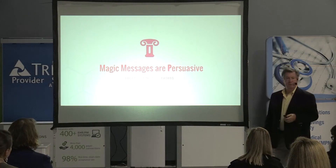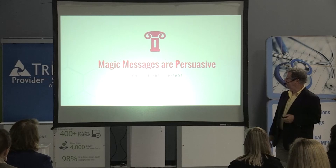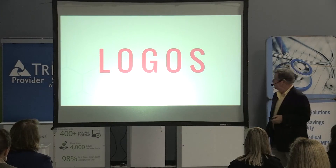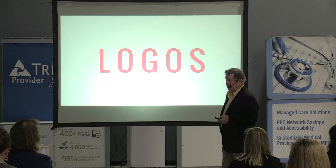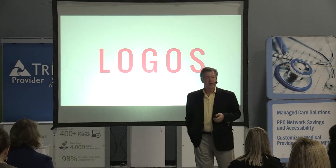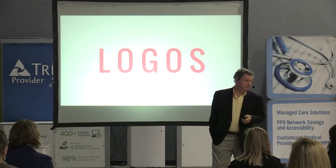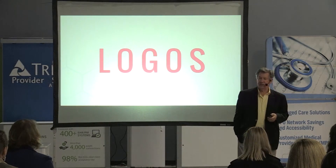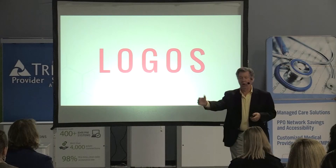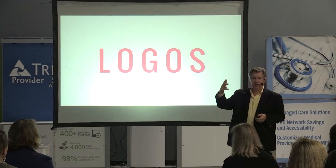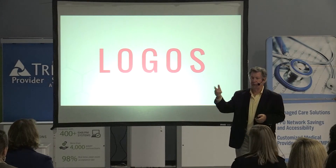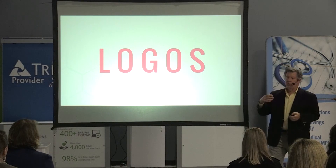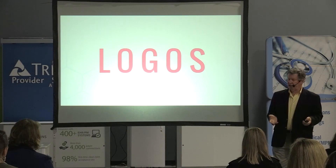The first element of persuasion — the three elements, the three appeals — are logos. Logos is where we get our word logic from. One appeal — the last one has to be last, the other two are simultaneous — but I want to appeal to people logically.